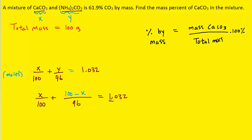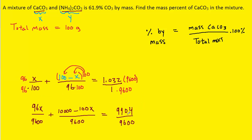One way of solving this is to find a common denominator. Multiplying all the denominators together, the common denominator is 9600. We multiply the first fraction top and bottom by 96, and the second fraction top and bottom by 100. On the right-hand side we multiply by 9600. In the numerator we distribute the 100, and we also multiply 1.032 by 9600.